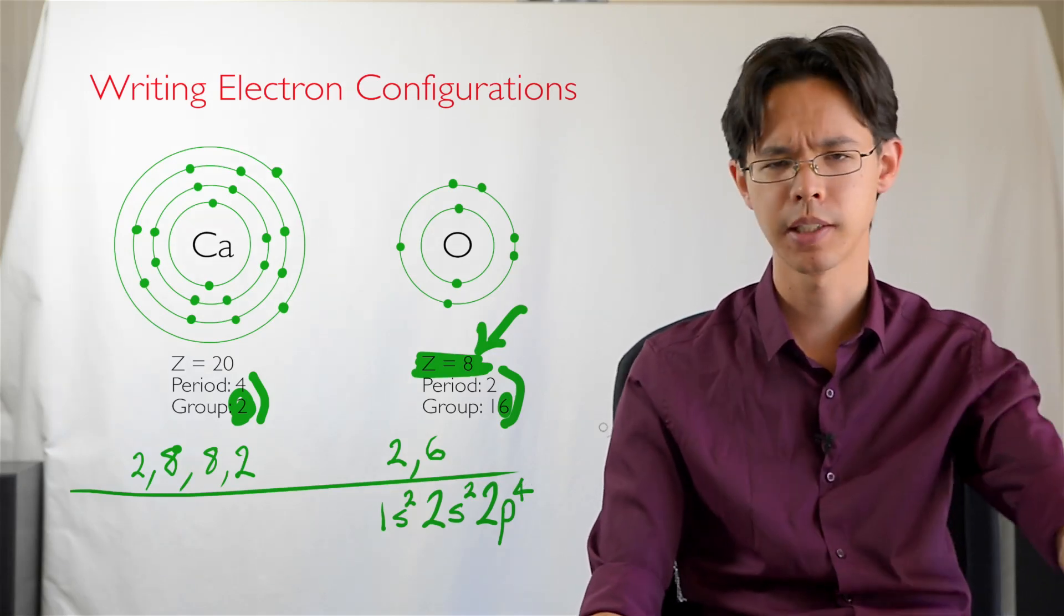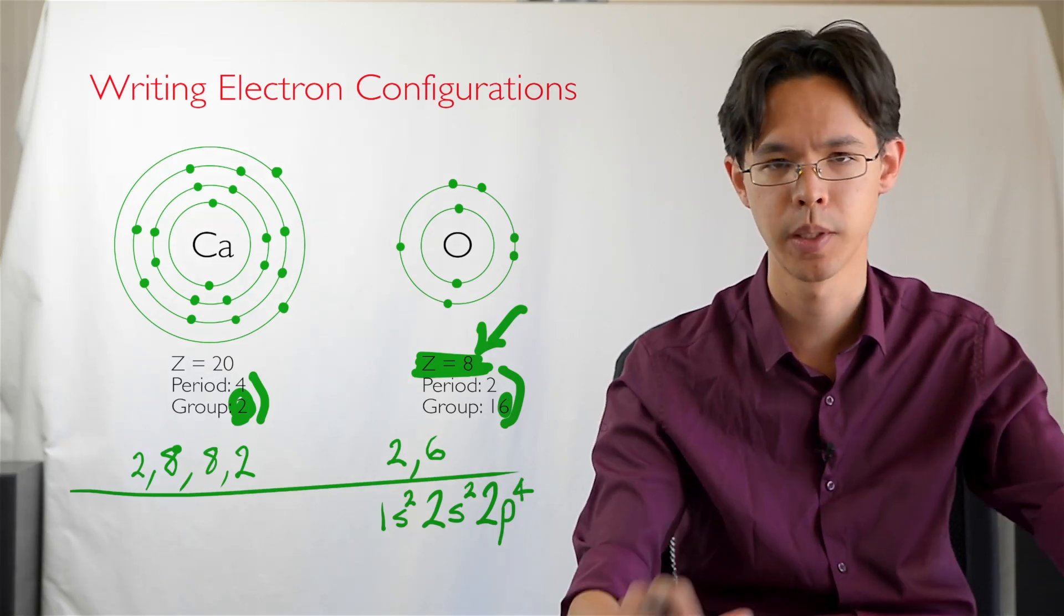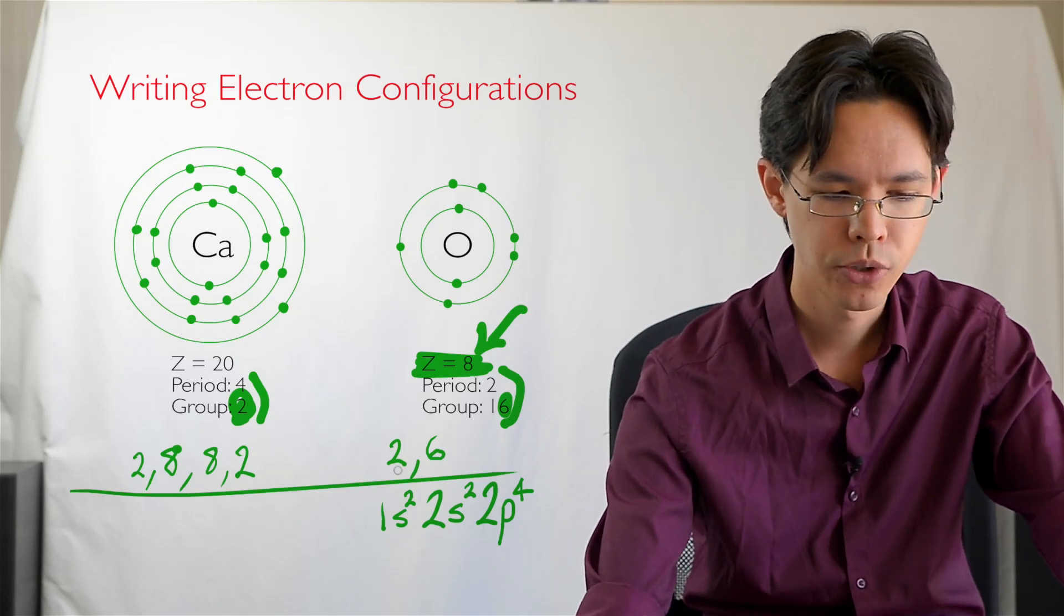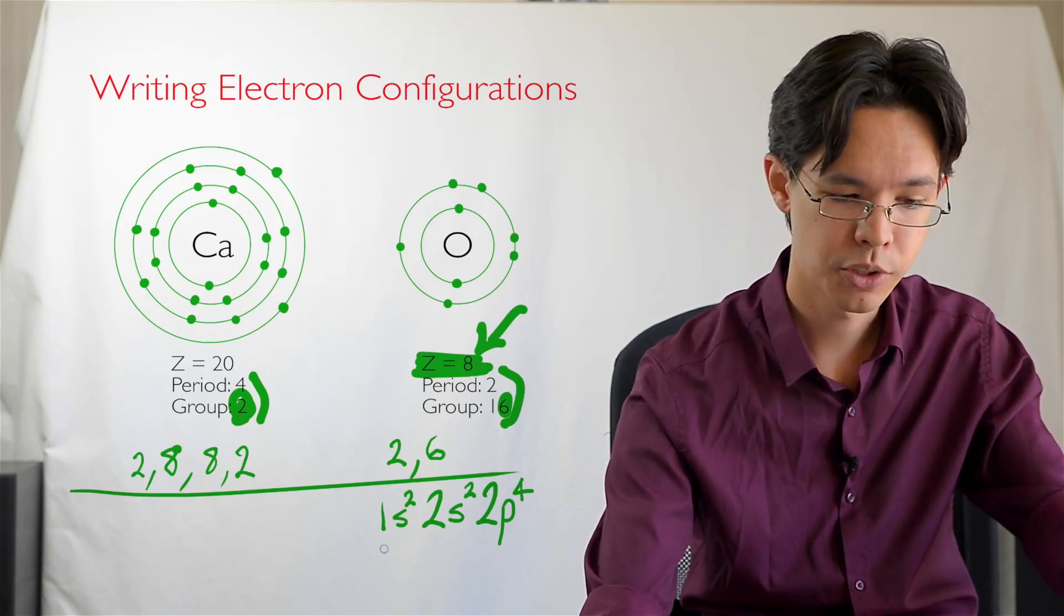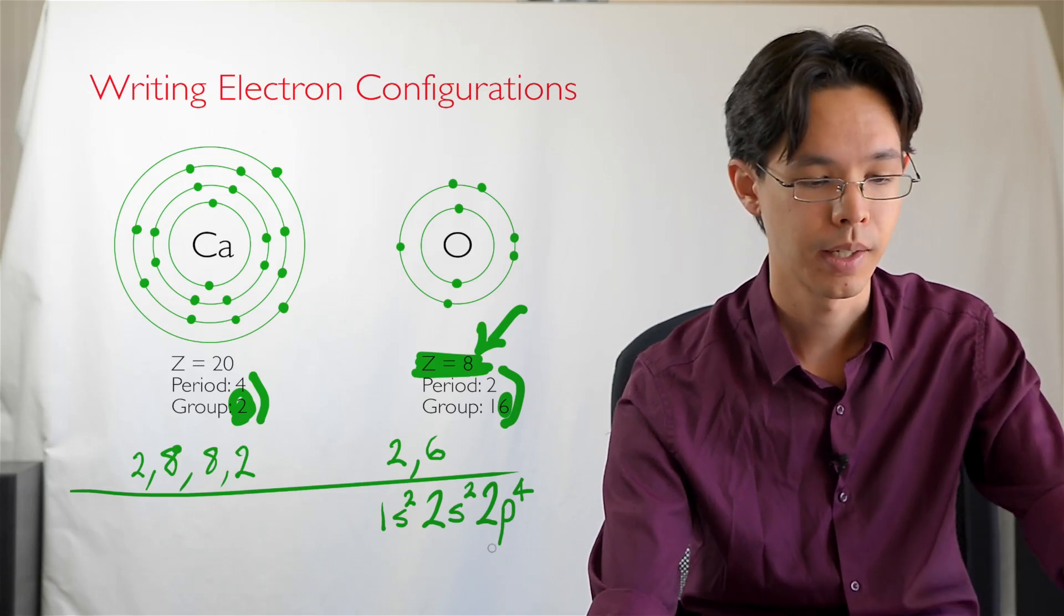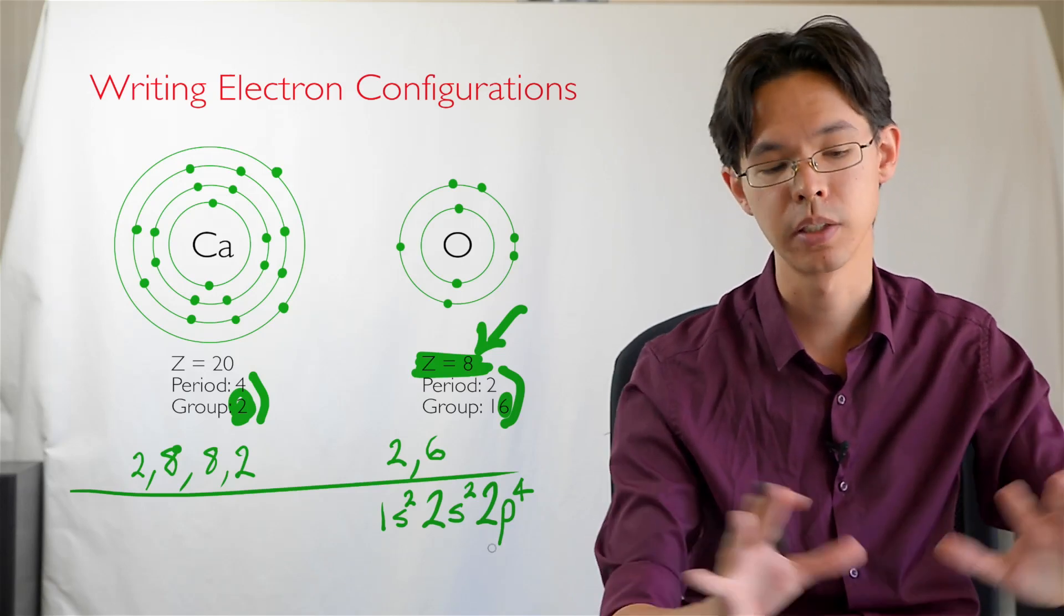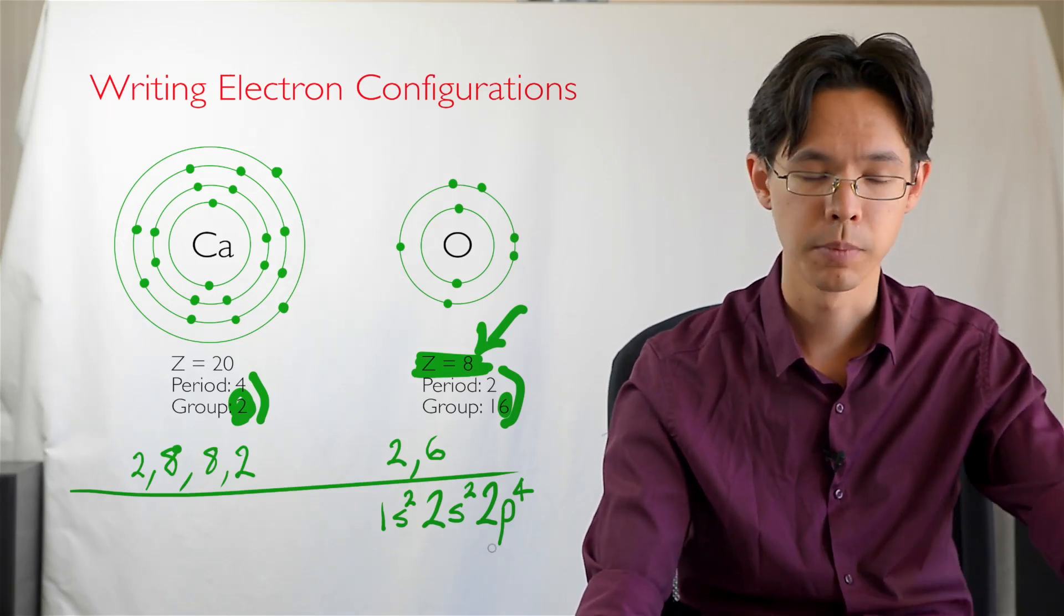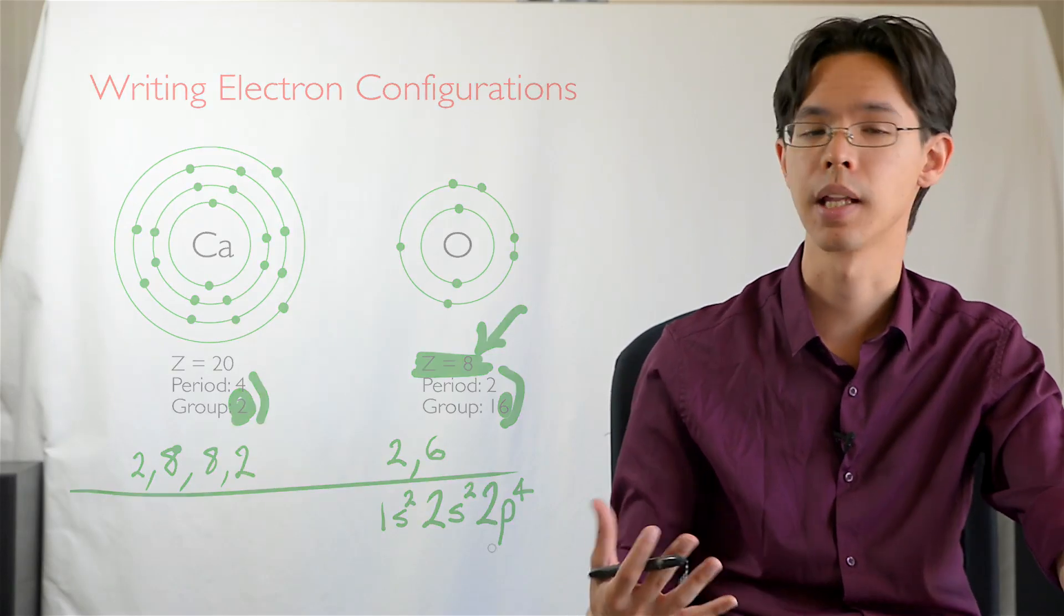So if you see electron configurations when you're googling them on the web, sometimes you'll see this 2,6 and sometimes you'll see 1s2, 2s2, 2p4, etc. That's the other way of writing them down, but it's a little bit more complex and it won't make any sense to you unless you've done things like orbitals, which comes from Erwin Schrödinger, which you can read all about later on in perhaps a future video.